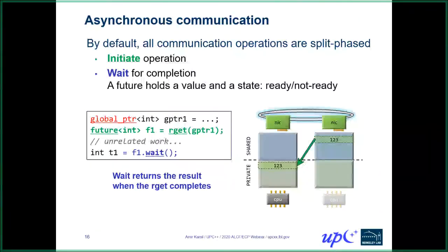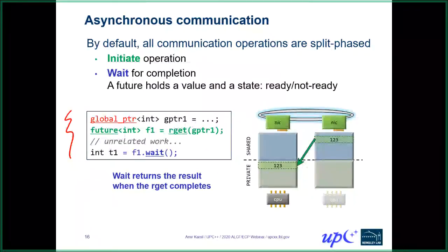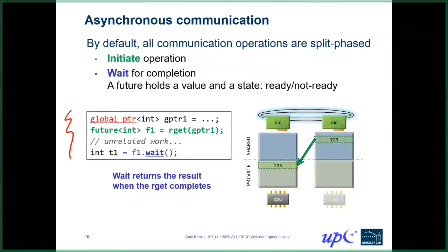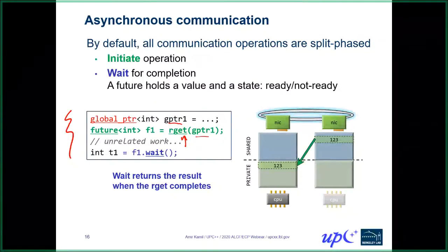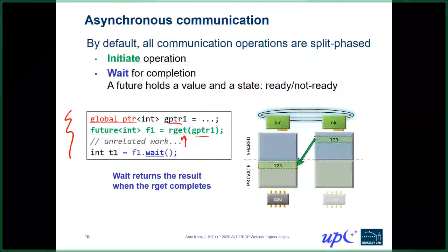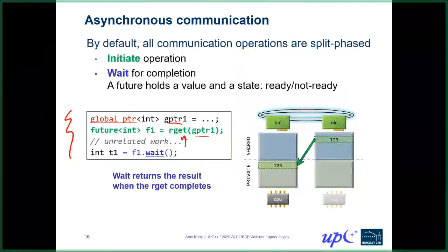Let's look at what we mean by asynchrony. When it comes to a communication operation, we have an initiation separate from the actual wait for completion. Looking at an example of a one-sided get from a global pointer: this global pointer may be referencing memory on some other process. We do an rget of that, and what we get back is not the actual data value directly but rather a future of int.